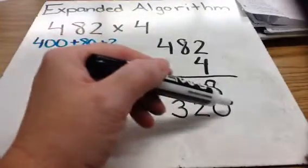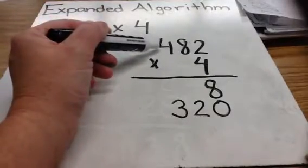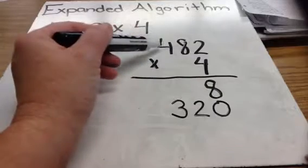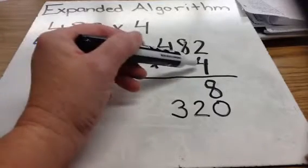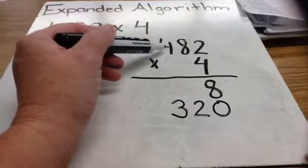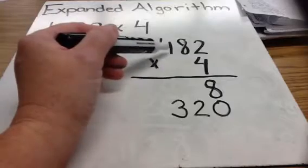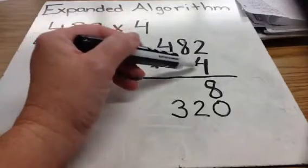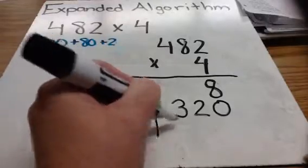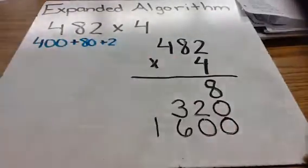Those are both partial products, but I still haven't done anything with this 4 in the hundreds place. So, I will go back and multiply 4 times the 4 in the hundreds place — that is really 4 times 400. I can use my basic fact for 4 times 4; I know that equals 16. So, 4 times 400 actually equals 1,600. It's very important that I get that number lined up properly.